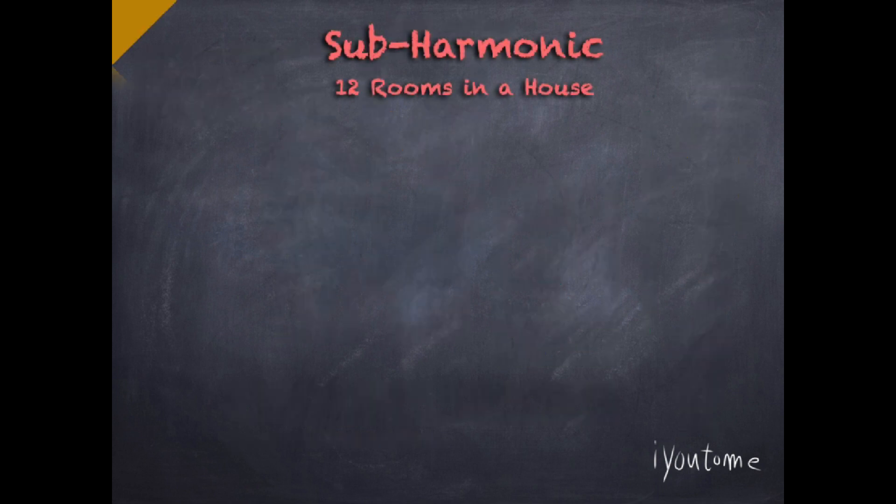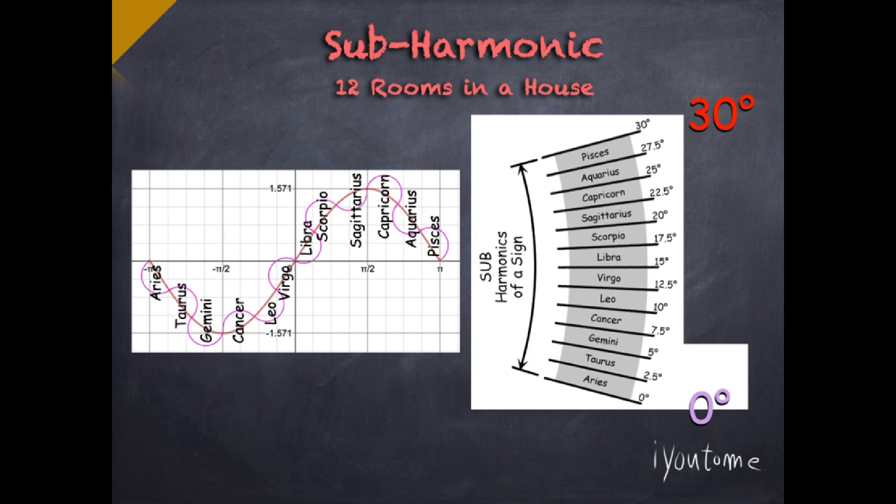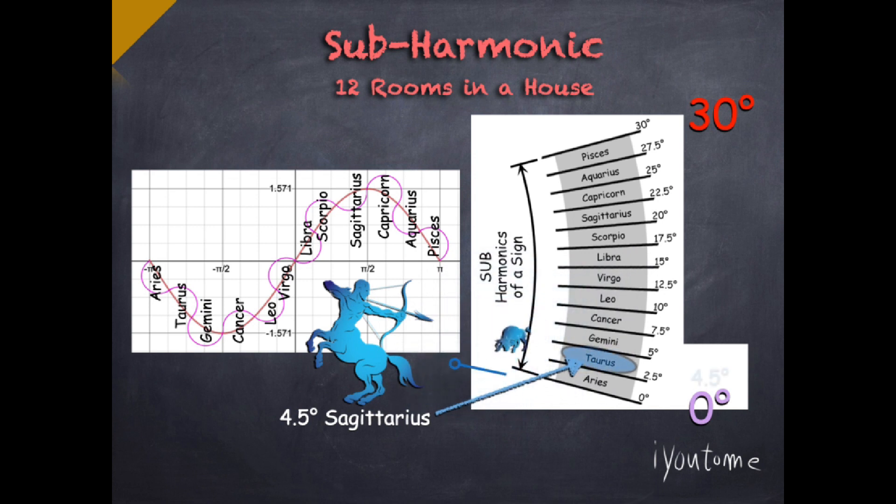A quick note on how sub harmonics work to help create intentions. Sub harmonics are simply a subset of twelve rooms in each sign or house. Each house or sign is split into twelve sub harmonics from 0 to 30 degrees in 2.5 degree increments. This can be represented as a harmonic wave of energy within the sign or house. For example, 4.5 degrees Sagittarius is in the sub harmonic of Taurus. This makes for a more accurate understanding of the energy of alignments.